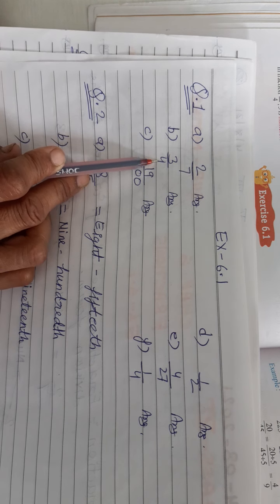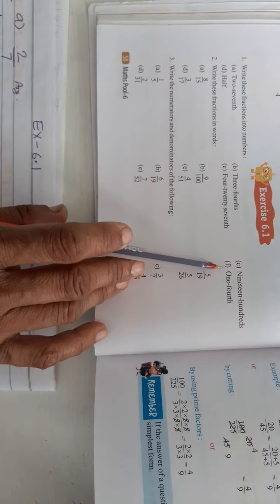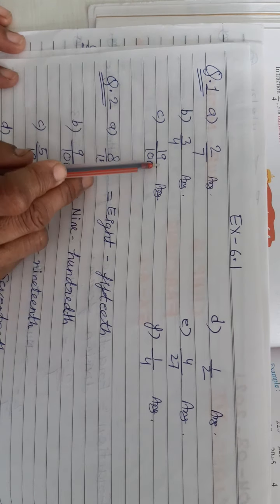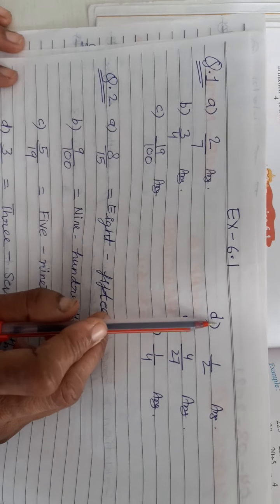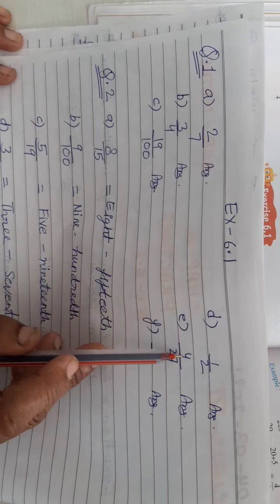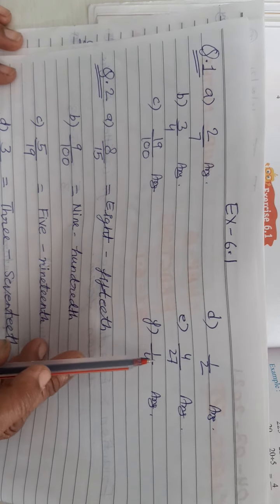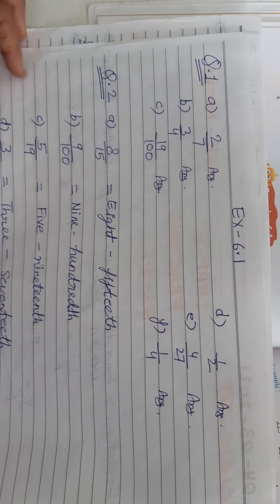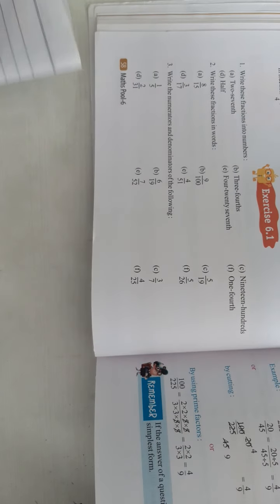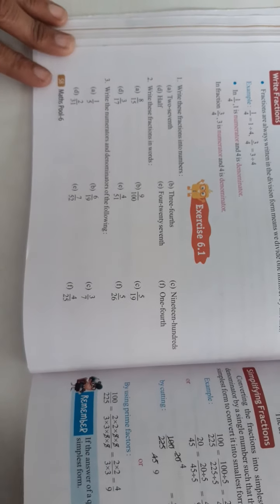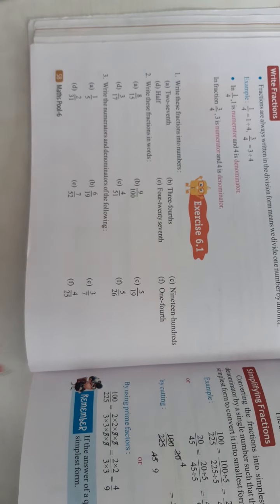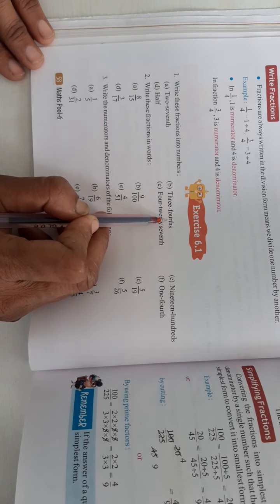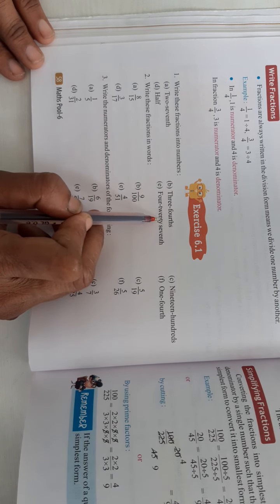This is question number 1 part c. We have 4 upon 3, and part d: 4 upon 2. For question 1 — the numerator is 1 on top and the denominator is 4 on the bottom — so it is 3 upon 4. We will write 9 for the next part.